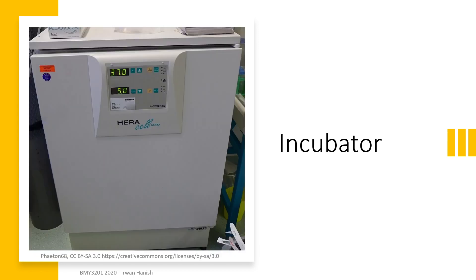Another machine you'll use a lot is the incubator. They come in many sizes and features depending on what your lab can afford and what is necessary for your experiments. If your experiments simply need you to grow common bacteria that aren't very finicky, a simple incubator maintaining 37 degrees Celsius is sufficient. But for sensitive tissue culture work, you need more precise control of environmental factors to mimic their native biological environments — for instance, controlling humidity, moisture levels, and CO2 levels.